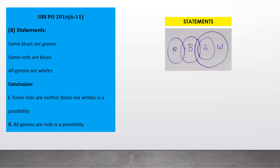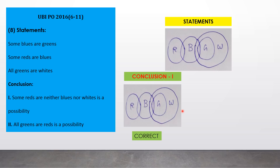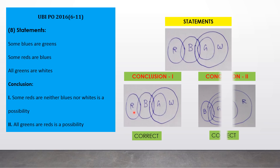Question 9 — Statements: some blues are greens, some reds are blues, all greens are whites. Conclusion one — 'some reds are neither blues nor whites is a possibility': from our first basic diagram this is already satisfied, so conclusion one is correct. Conclusion two — 'all greens are reds is a possibility': draw all greens inside red, then check — 'some blues are greens' — add overlap; 'some reds are blues' — add overlap; 'all greens are whites' — no contradiction. So conclusion two is also correct. Answer: option E.